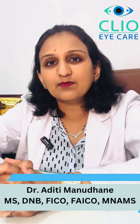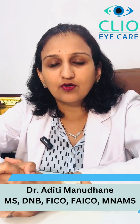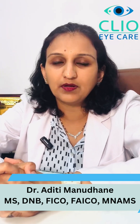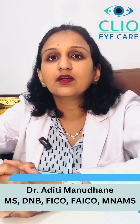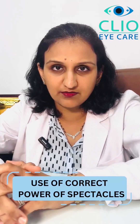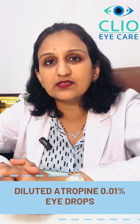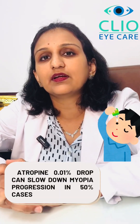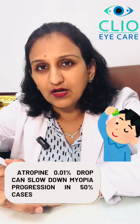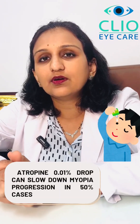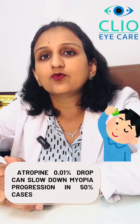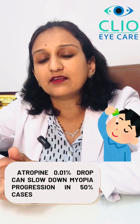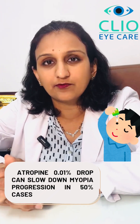The first step towards myopia control, or halting the progression of myopia in children, is to give them correct glasses prescriptions. The second option is to consider using diluted atropine eye drops in documented cases where there is a progression of myopia. Diluted atropine eye drops could help to slow this down in as high as 50 percent of patients.